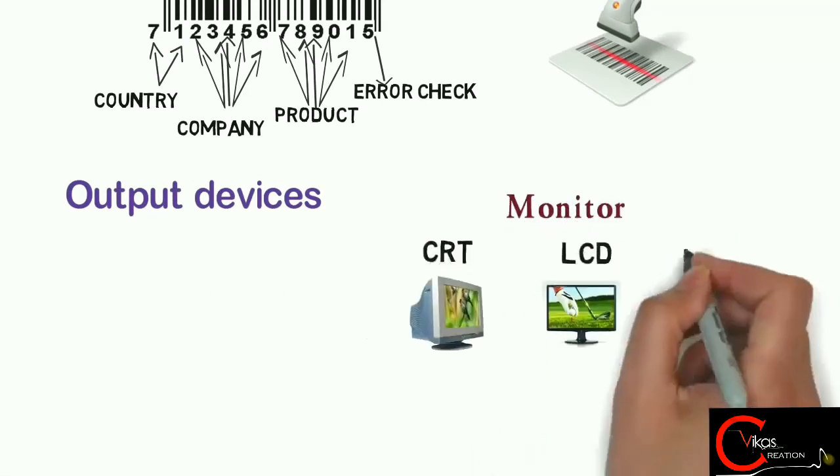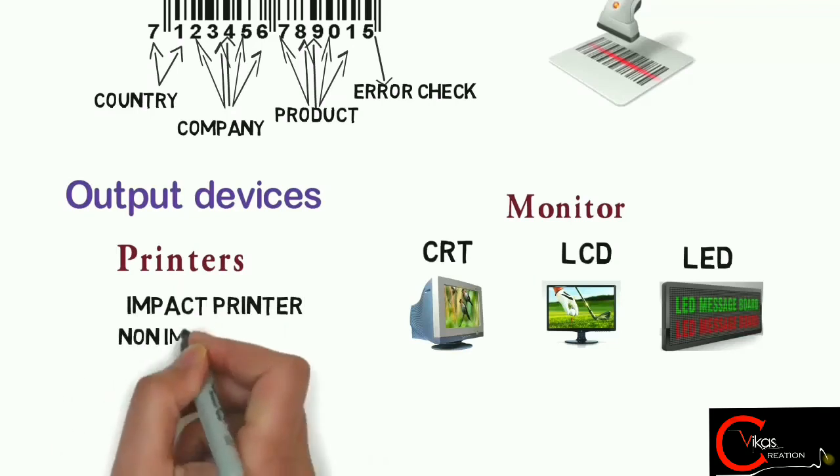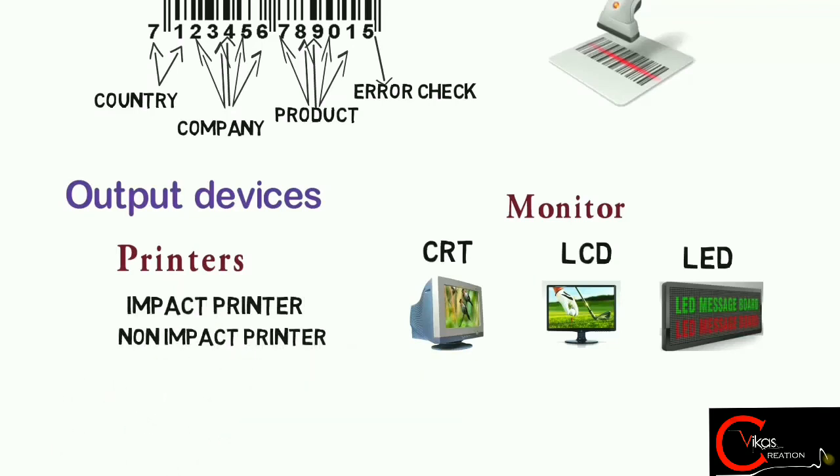Some output devices used as ICT tools are monitor. It may be of any type like CRT display, LCD display, or LED display. Printers are also used as output devices. It may be an impact printer or non-impact printer.